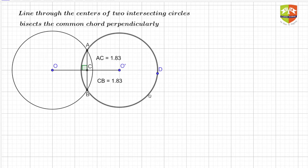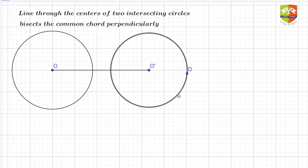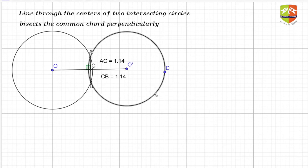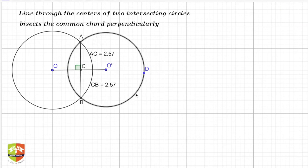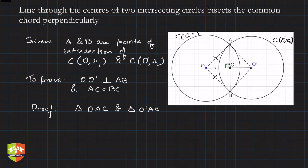When the distance is too large there is no common chord, so there's no point discussing that case. We just saw the validation of this theorem — that a line through the centers of two intersecting circles bisects the common chord perpendicularly — on GeoGebra, trying different configurations. Now we are going to prove this. A and B are points of intersection of the two circles; we have to prove that OO-dash is perpendicular to AB and AC is equal to BC.